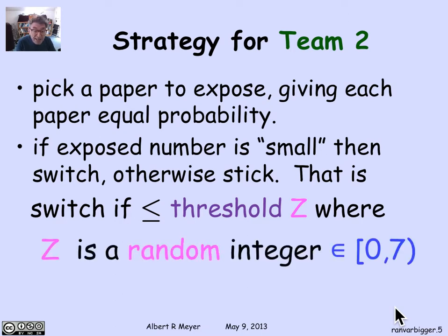So what you do — and this is where probability comes in — is pick z in a way that can't be predicted or exploited by team 1. You pick z at random to be any number from 0 to 6, inclusive: 0, 1, 2, up through 6. Being less than or equal to z means small; being greater than z means large. When you see a small number you switch, and when you see a large number you stick. But what counts as large or small varies each time you play, depending on what random z comes out to be.